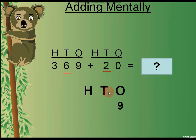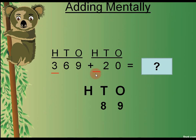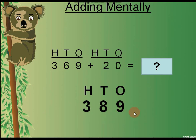6 and 2 make 8, and we write it in the answer at the tens place. Then we move to the hundreds: at the hundreds place there is 3 in the first number and nothing in the second number, so 3 remains as it is. That's how we find our answer, which is 389. Notice that there is a change only at the tens place from the first number, so that's how we can add such questions mentally.